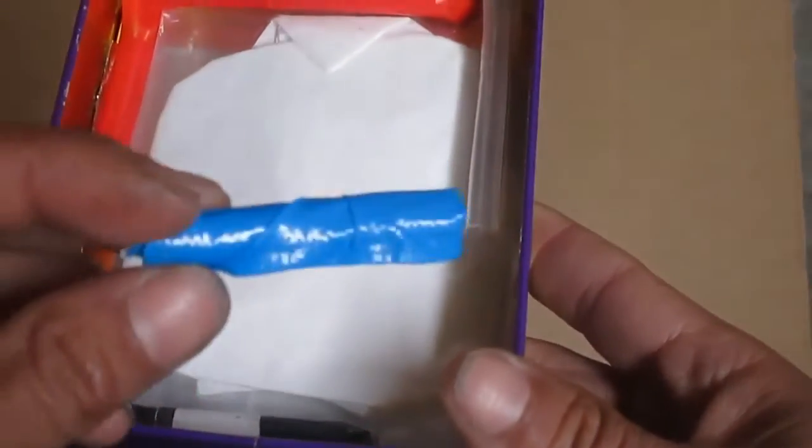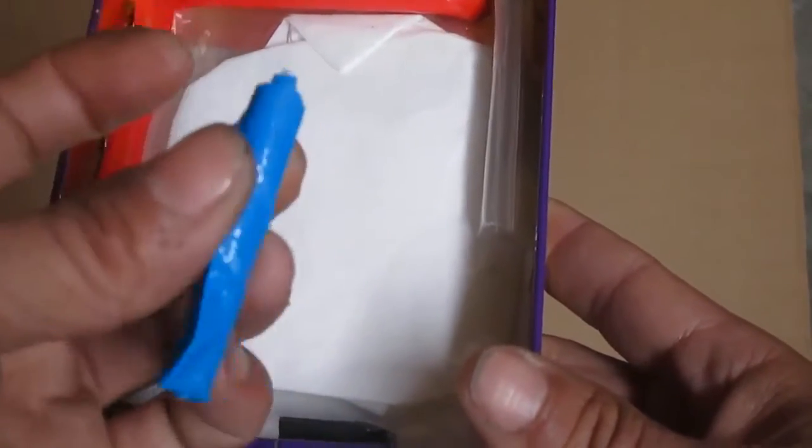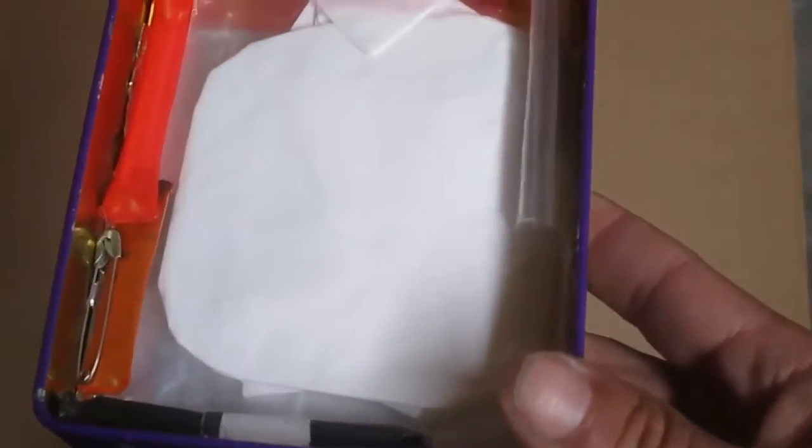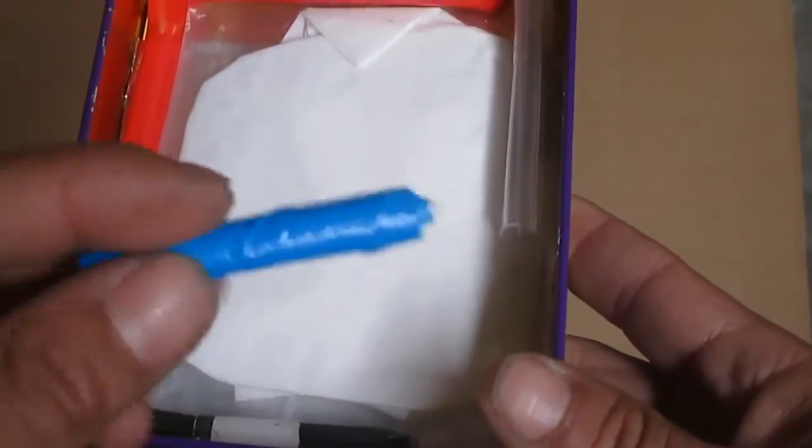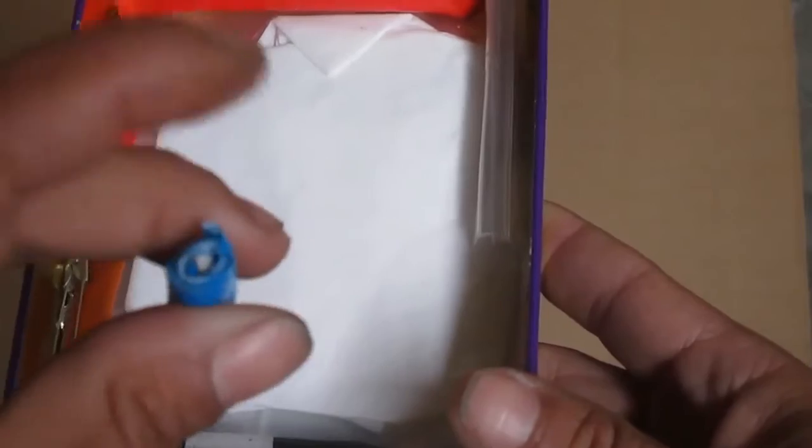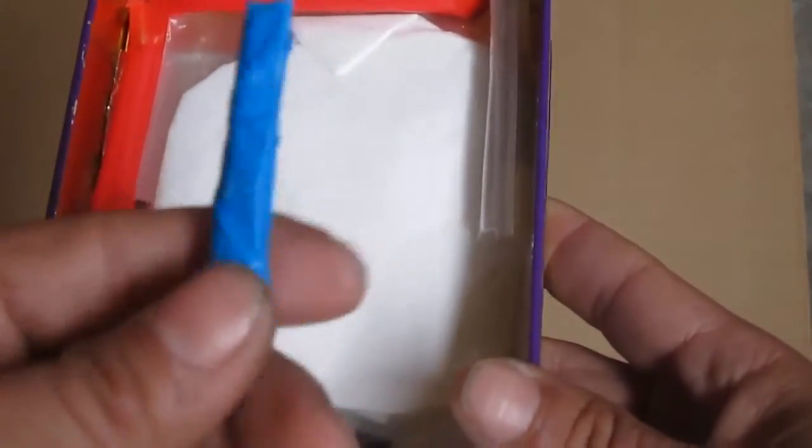Next here I got some blue duct tape. Make repairs on the shelter, use it as emergency fire starting if I needed to. Lots of good uses for something like tape.